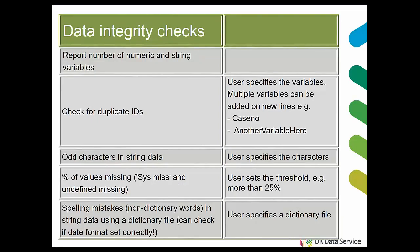Now we have our data integrity checks — checking the actual spreadsheet data itself. It reports on the number of numeric and string variables it finds. It's looking for duplicate IDs, and we found that in the clinical trials world that's often the case. We specify characters we don't want to find in string data. We're looking at the percentage of values that are missing for each variable — for example, you might say I want to know if any variables have got more than 25% missing values. And we're also looking for spelling mistakes in string data, which is useful when you've got text within a field.